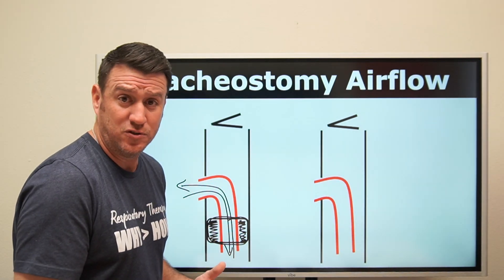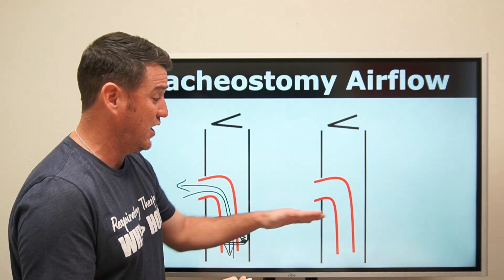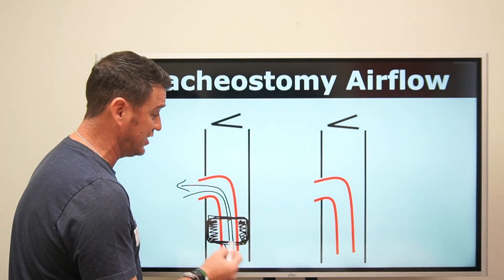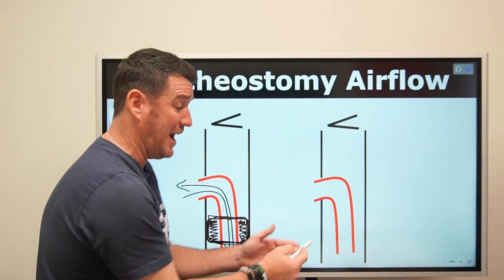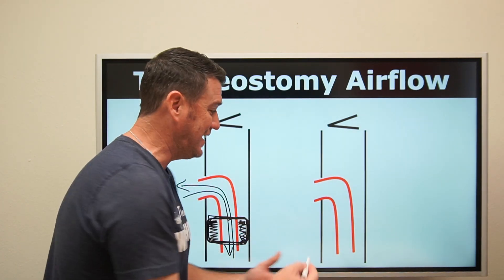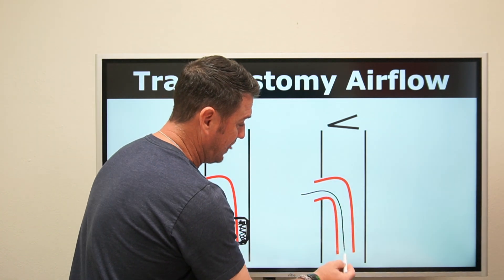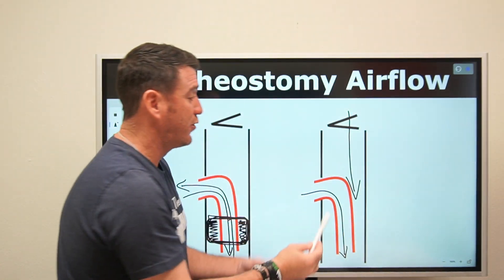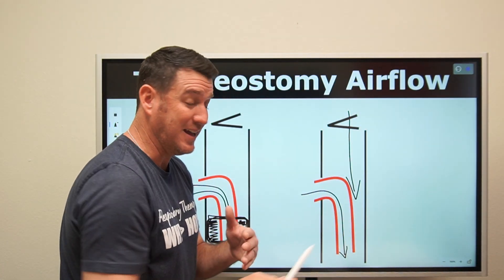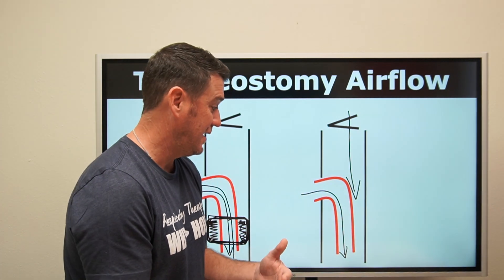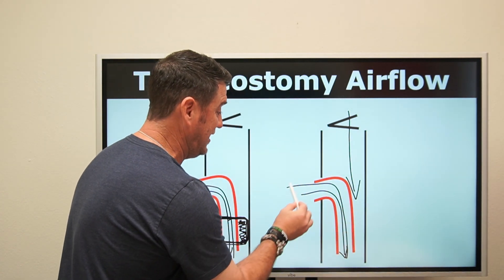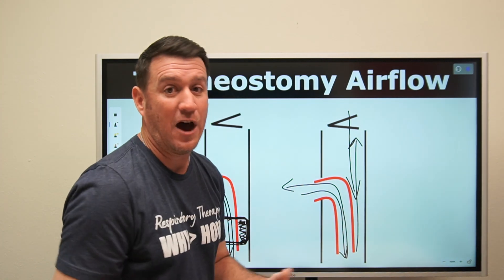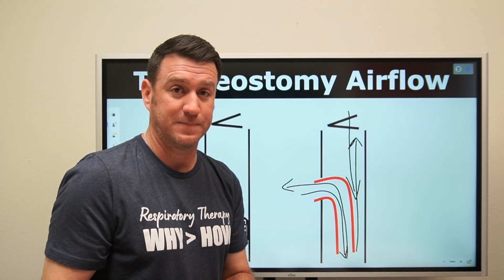Not all tracheostomy tubes have a cuff. If it doesn't have a cuff, you can see there's no illustration of the cuff. On this side, again following the path of least resistance, you can get airflow that comes in through the artificial airway — the trach tube — and also some airflow that will come in through the upper airway. On exhalation, airflow will leave through the tracheostomy tube and some might leave up and around the tracheostomy tube and out through the upper airway. That's normal.